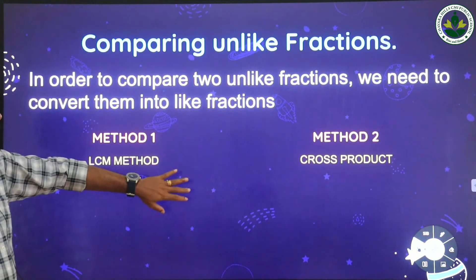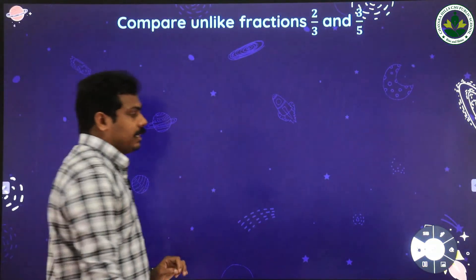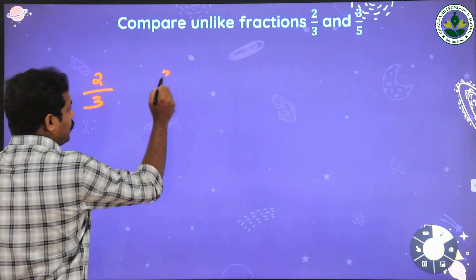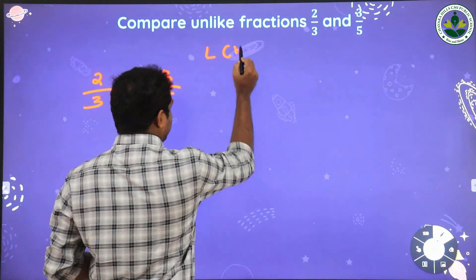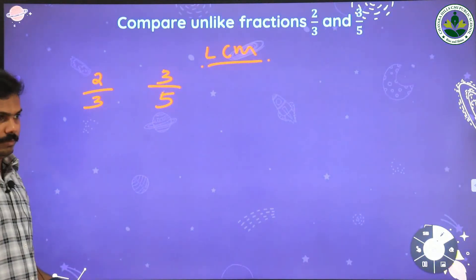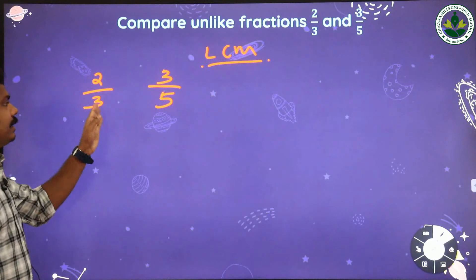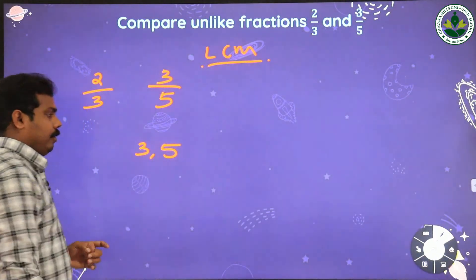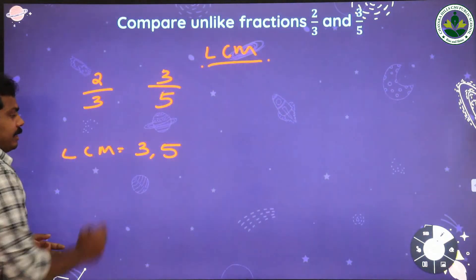Let us discuss the first method — the LCM method. Here we need to compare 2 by 3 and 3 by 5 to find which one is bigger or lesser. Using the LCM method, we need to find the LCM of the denominators. The denominators here are 3 and 5, so we find the LCM of 3 and 5.